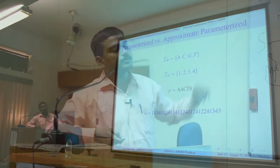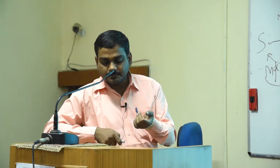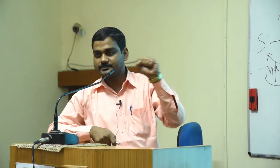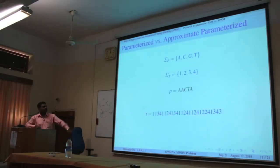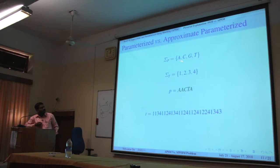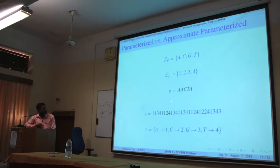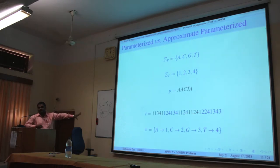Next, parameterized and approximate parameterized string matching. This idea came around 1993, given by Brenda Baker. The motivation was software duplication: somebody takes a software, renames variables and recodes it. Parameterized string matching finds occurrences of a pattern under a bijection mapping — meaning the pattern matches a part of the text under some renaming of symbols. For example, A maps to 2, C maps to 1, G maps to 3, T maps to 4. This is called parameterized string matching, and it can detect whether somebody copied your text.